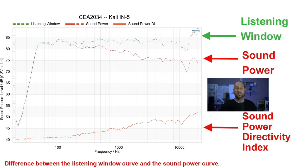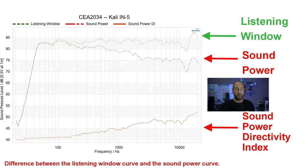The second directivity index is the sound power directivity index. It's basically the same thing as the early reflections DI except it compares the listening window versus the sound power — shown here in red. The definition: the difference between the listening window curve and the sound power curve.